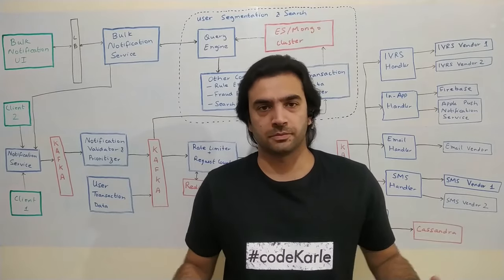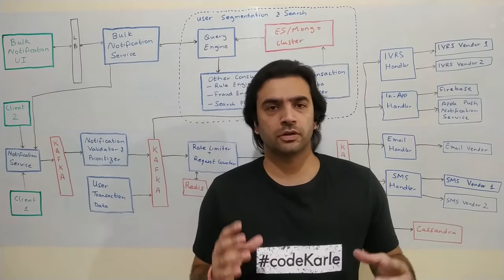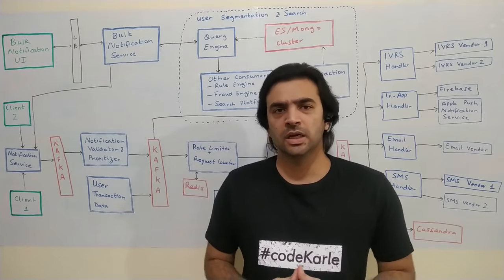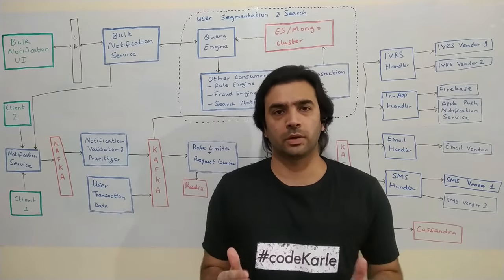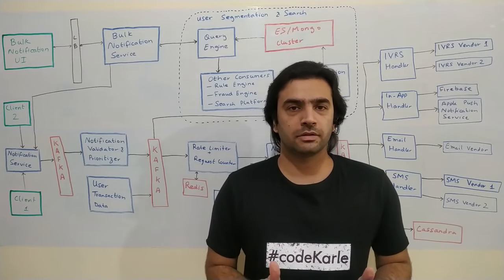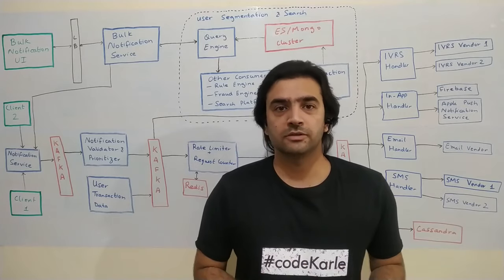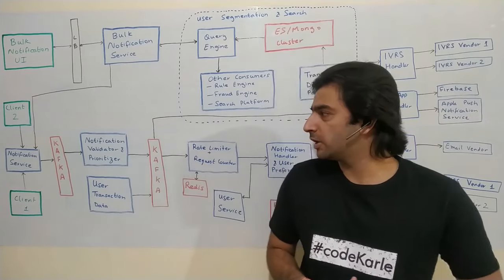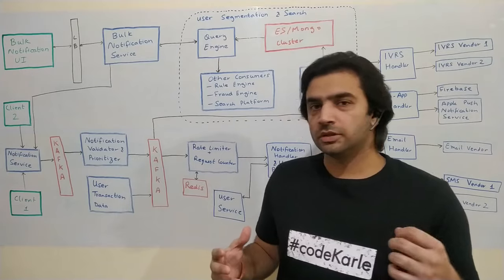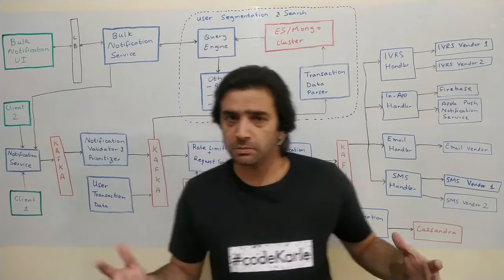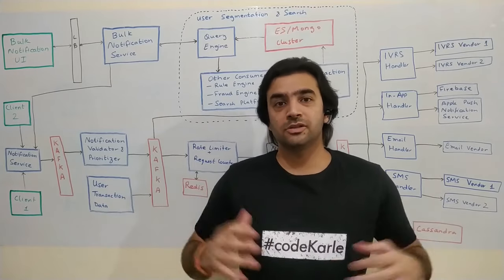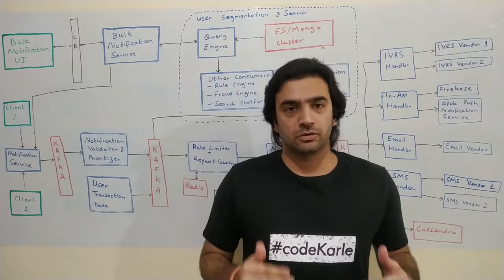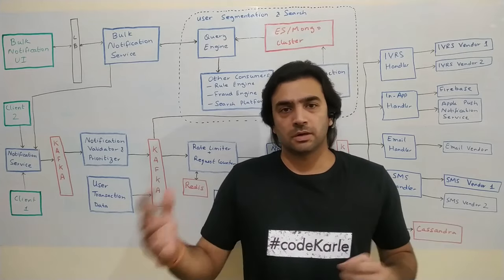Now let's look at the overall architecture. A quick disclaimer: if you're building it for a small enough use case — like sending email notifications to some customers given some criteria — you can build all of this as one deployable service. But if you truly want to build it as a SaaS product where enormous numbers of clients would be using it for a lot of notifications, then this kind of system would be worth it. The starting point is a couple of clients — client one, client two, any number of clients — who want to send out a notification. All of those requests come into something called a notification service, which is the interface for us to talk to other teams or companies.